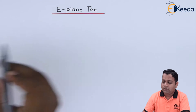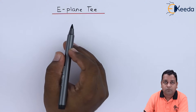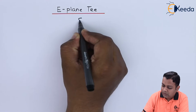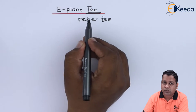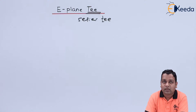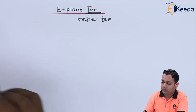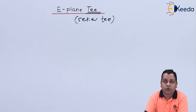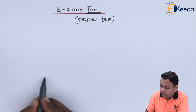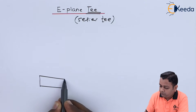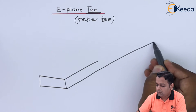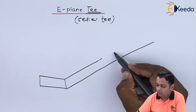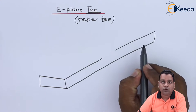We start with our topic: E-plane T. E-plane T, to describe its particular behavior, is also called the series T. The word 'T' is attached to this microwave component to indicate that it has three ports and is shaped like the English letter T. As introduced in the first topic on microwave hybrid circuitry, this can be drawn in a diagram. The main arm of the rectangular waveguide extends from port number one to port number two.